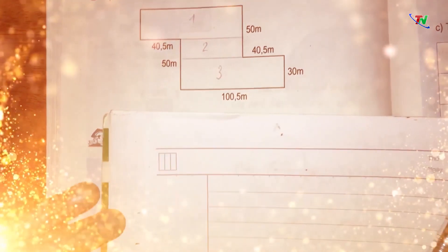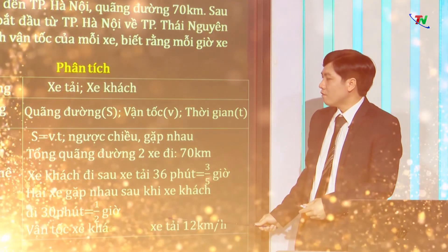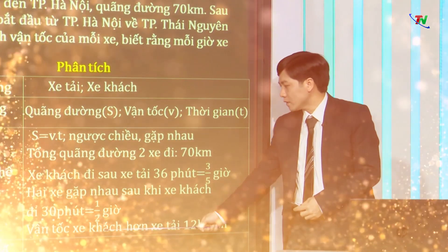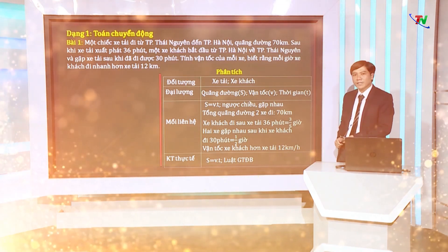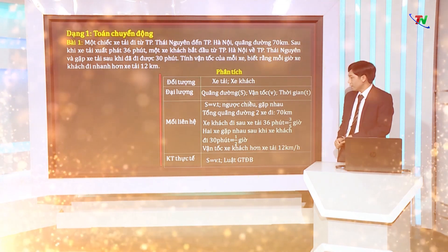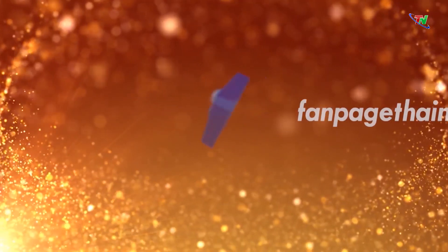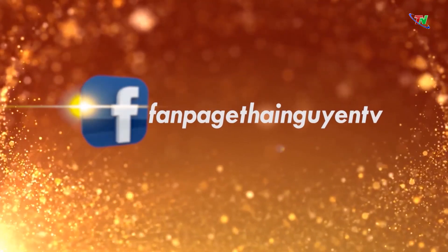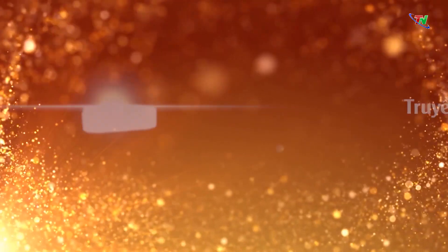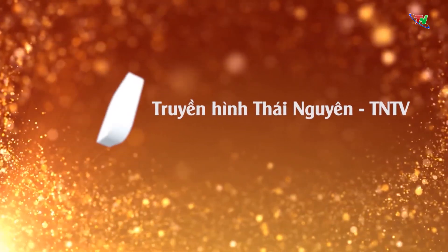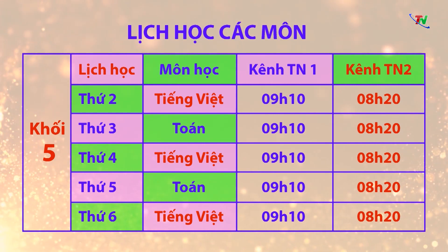Chương trình được phát sóng lúc 8h20 phút thứ 2 đến thứ 6 hàng tuần, phát lại vào buổi chiều cùng ngày trên cả 2 kênh TN1 và TN2 Đài Phát Thanh Truyền hình Thái Nguyên, bắt đầu từ ngày 16 tháng 3. Đồng thời được đăng tải trên website thainguyentv.vn, trên fanpage Truyền hình Thái Nguyên TNTV, trên 2 kênh Youtube Dạy và Học Thái Nguyên và Truyền hình Thái Nguyên TNTV, giúp học sinh có thể xem lại bất cứ lúc nào.